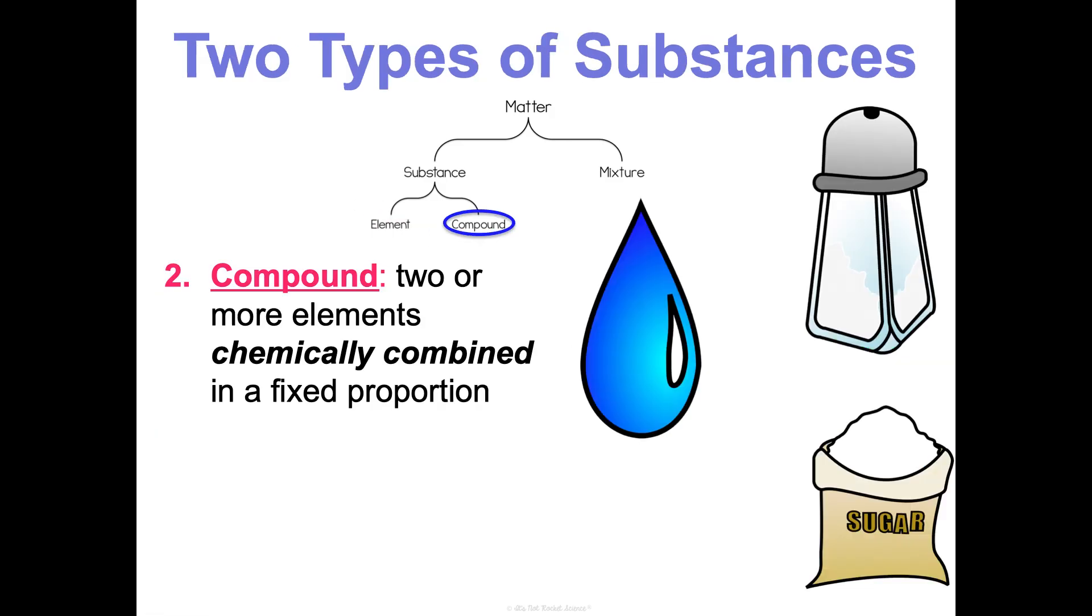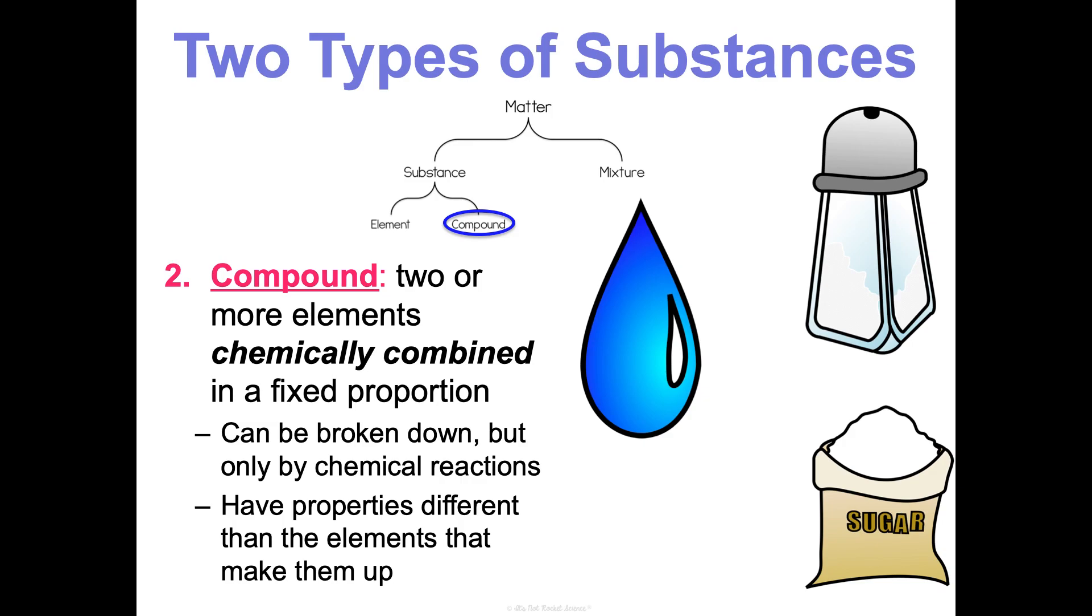Now the other type of substance is a compound. This is when two or more different elements get chemically combined in a fixed proportion. So we wouldn't say that O2 is a compound, because it's the same, it's atoms of the same element. But in a compound, we're looking at atoms of different elements, and they're going to be combined in a fixed proportion. You can break them down, but only by doing a chemical reaction. And what's interesting about compounds is because they are a new formation, when we do a chemical reaction, we're making new substances. Because they're new, they have properties that are different than the elements that make them up.